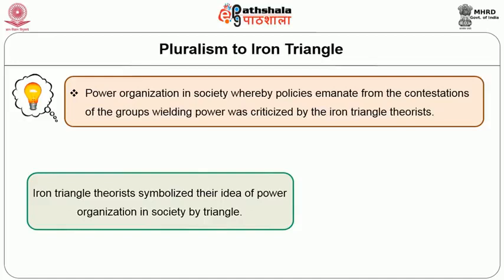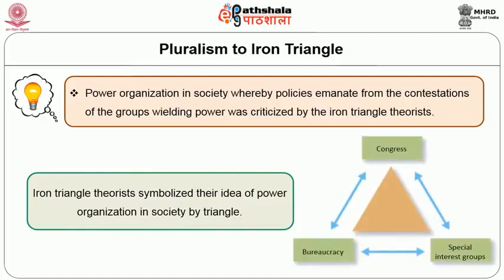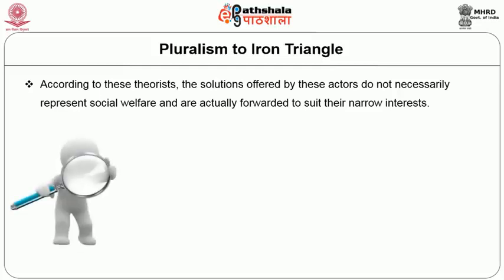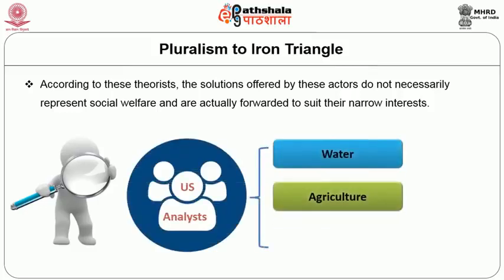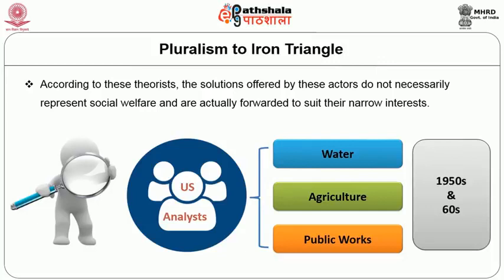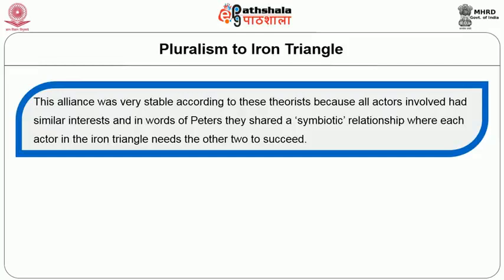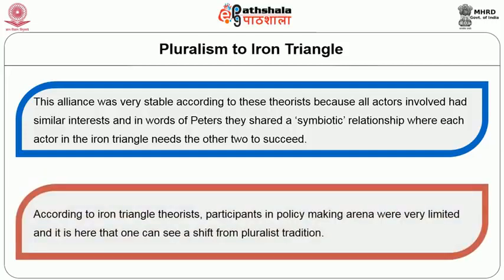Iron triangle theorists symbolize their idea of power organization in society by a triangle whose three nodes are represented by Congress, bureaucracy, and special interest groups. According to these theorists, the solutions offered by these actors do not necessarily represent social welfare and are actually forwarded to suit their narrow interests. This change in approach came as a result of case studies done by US analysts in the sectors of water, agriculture, and public works in the 1950s and 60s. They observed that congressional committees, executive agencies, and producer groups formed a close alliance and were instrumental in the policy making process. This alliance was very stable because all actors had similar interests and, in the words of Peters, they shared a symbiotic relationship where each actor in the iron triangle needs the other two to succeed. According to iron triangle theorists, participants in the policy making arena were very limited, and it is here that one can see a shift from the pluralist tradition.